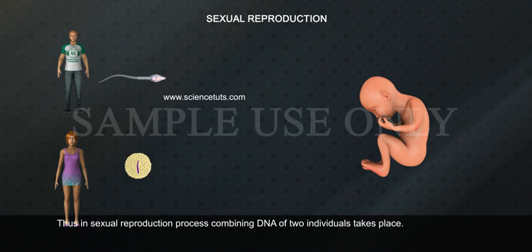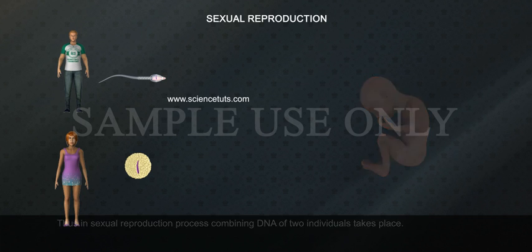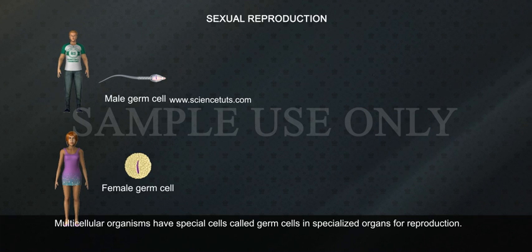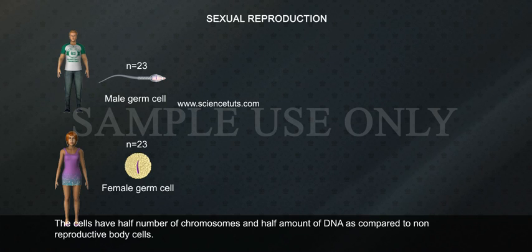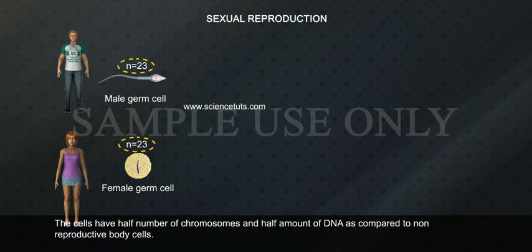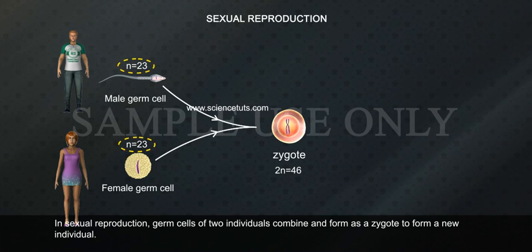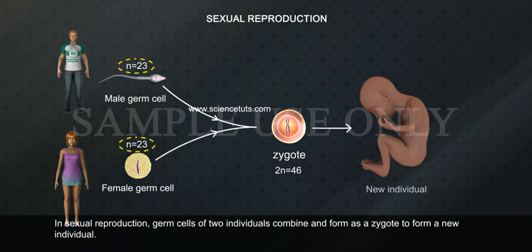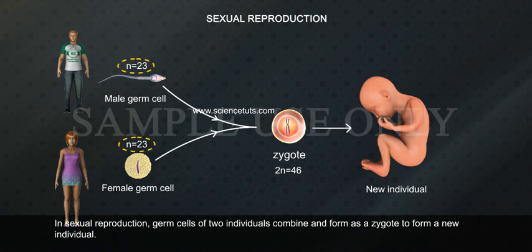Thus, in sexual reproduction, the process of combining DNA of two individuals takes place. Multicellular organisms have special cells called germ cells in specialized organs for reproduction. These cells have half the number of chromosomes and half the amount of DNA as compared to non-reproductive body cells. In sexual reproduction, germ cells of two individuals combine and form a zygote to form a new individual.